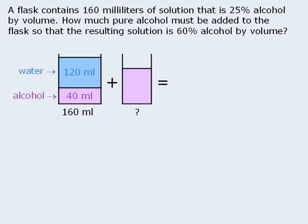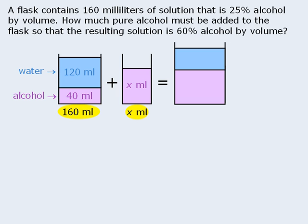To the solution, we want to add a certain amount of pure alcohol so that the new mixture is 60% alcohol by volume. Since we do not yet know how much alcohol needs to be added, let's say that we are adding x mL of alcohol. When we add these two solutions together, we get a new solution, which we will draw with the alcohol and water separated. Since we are combining 160 mL of the original solution and x mL of alcohol, the new solution must have a volume of 160 plus x mL. Since the original solution contains 40 mL of alcohol and the other solution contains x mL of alcohol, the new solution must have a total of 40 plus x mL of alcohol.